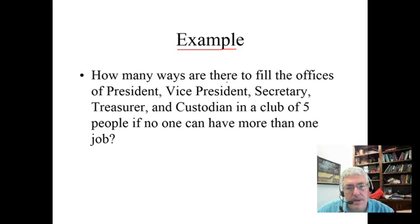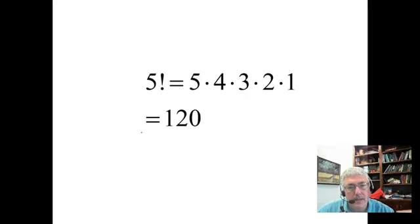So an example here. How many ways are there to fill the offices of president, vice president, secretary, treasurer, and custodian in a club of five people if no one can have more than one job? Well, five ways to choose the first one, four ways to choose the second, three ways to choose the third, two ways to choose the fourth, and one guy gets stuck being the last. So let's multiply these together: 120. So 5 factorial is equal to 120.